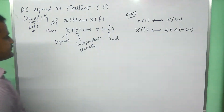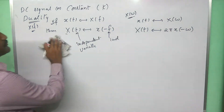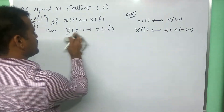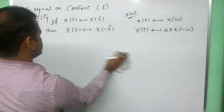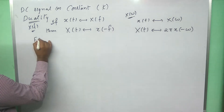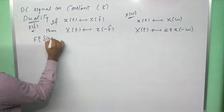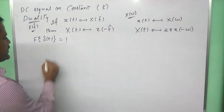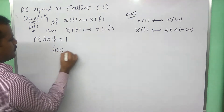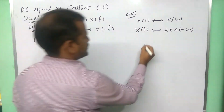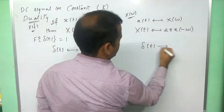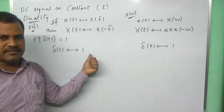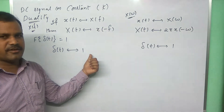Using this statement, let us find the Fourier transform of this constant. Along with this, let us recall the Fourier transform of the delta function. We have already derived that the Fourier transform of delta of t is equal to 1. Let us consider the Fourier transform pair: delta of t has Fourier transform 1. Here, the impulse function's Fourier transform is a DC signal — 1 is a constant DC signal we can consider.